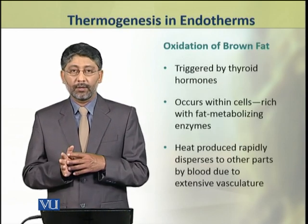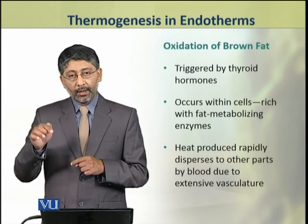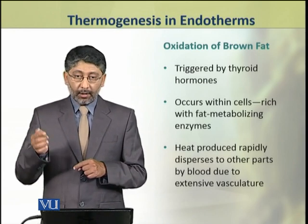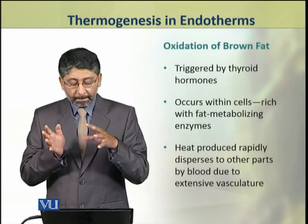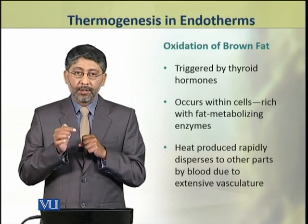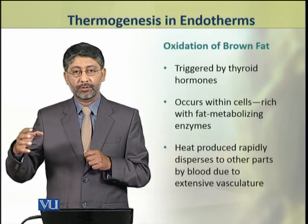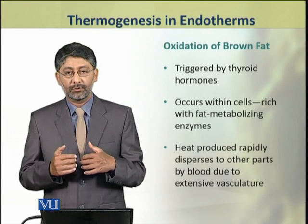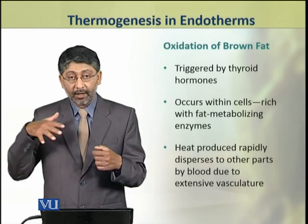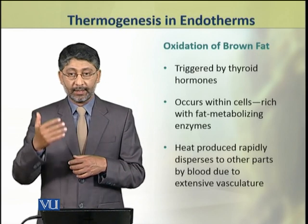The oxidation of brown fat is triggered by thyroid hormones. This oxidation occurs within the cells which are rich with fat-metabolizing enzymes. The heat produced as a result of oxidation is rapidly dispersed to other body parts where it is needed via the blood, because brown fat is highly vascularized with very high blood flow — so the heat generated is carried by the blood to the tissues that need it.